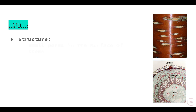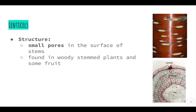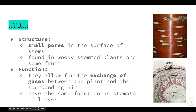Next we have lenticels. Their structure is that they are small pores on the surface of stems. Some people might see these and think they're just little nicks in the plant, but they are actually extremely important for some plants in order for them to survive. The opening goes all the way into the middle layers of the stem. They are found more in woody stemmed plants and in some fruits. Their function is to allow for the exchange of gases between the plant and the surrounding air — they have the same function as stomata in leaves, allowing carbon dioxide in for photosynthesis and oxygen to be removed into the atmosphere.